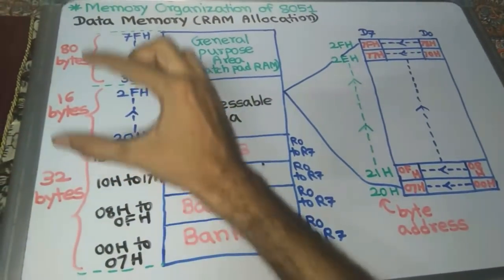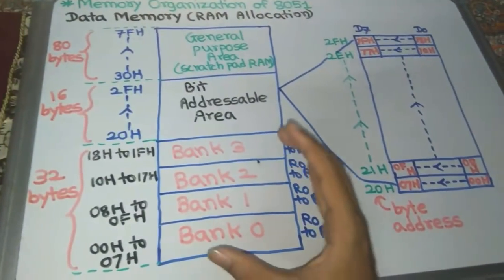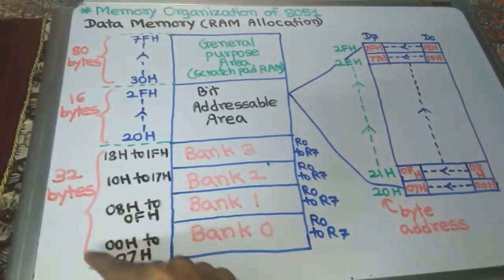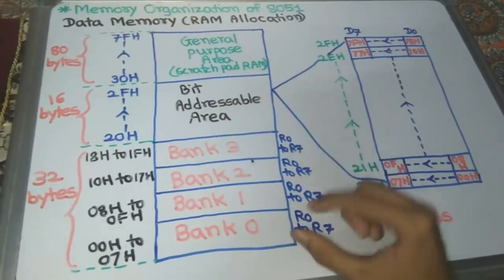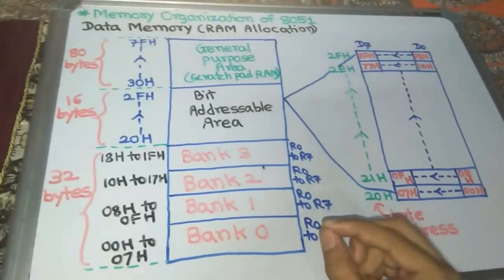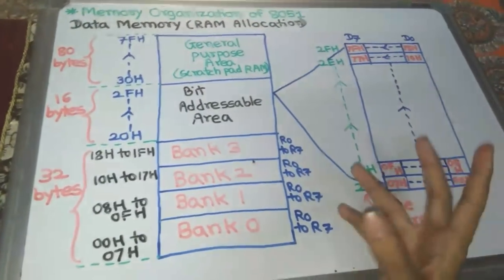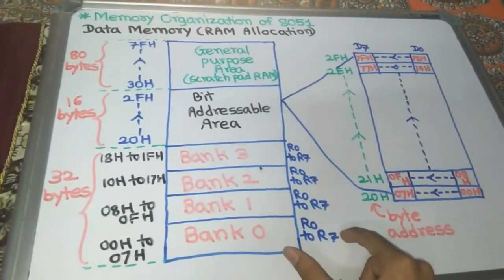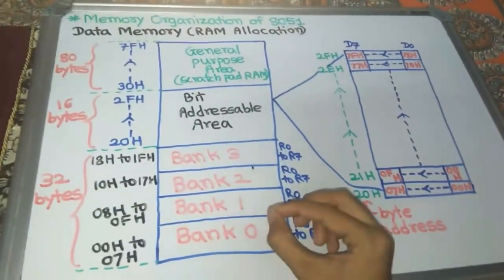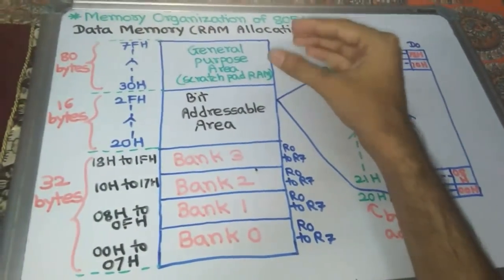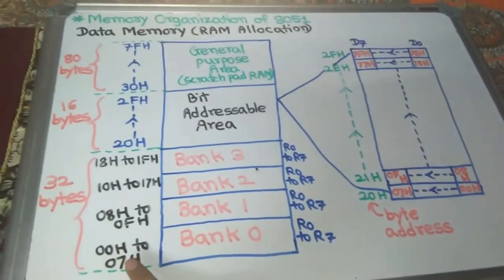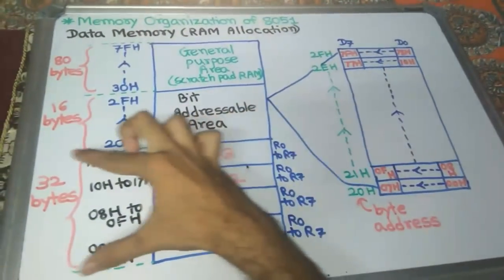The total RAM is 128 bytes divided into 3 parts: 32, 16, and 80 bytes. The 1st part is the Register Bank Area, which contains all register banks — Bank 0 to Bank 3. Each bank has 8 registers, R0 to R7. The banks are selected using RS1 and RS0 bits of the PSW, selecting Bank 0, 1, 2, or 3. The full register bank area of 32 bytes has address range 00H to 1FH.